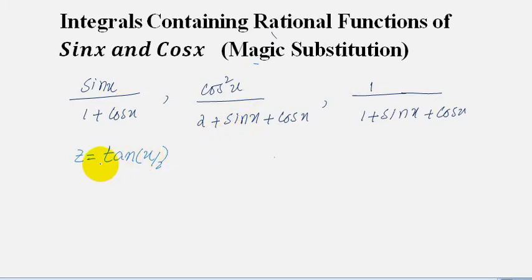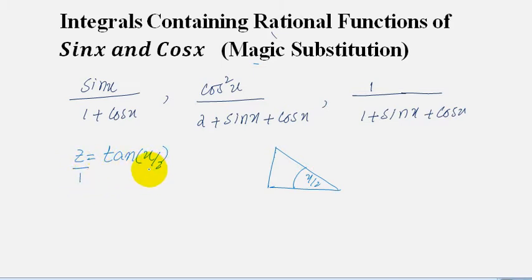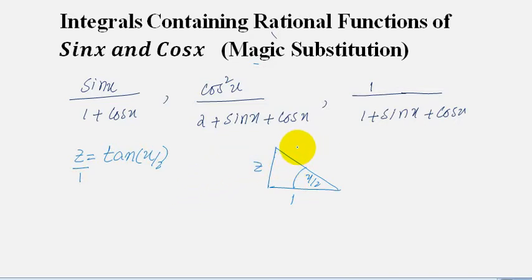In order to understand this substitution, I draw a right angle triangle. Our angle is x/2. Here z equals tan(x/2) can be written as z/1 equals tan(x/2). Since tan(theta) equals perpendicular over base, in this case z is our perpendicular and 1 is our base.